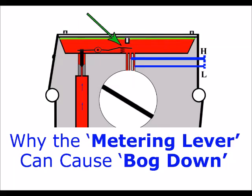Thank you for clicking through to this video, which is number 8 of 12. On this particular video, it's the metering lever which can cause bog down for two-stroke engines.